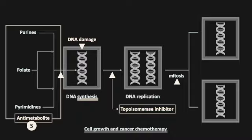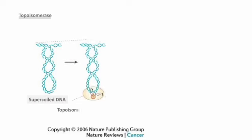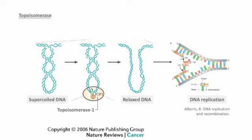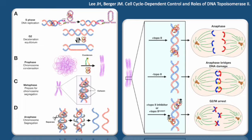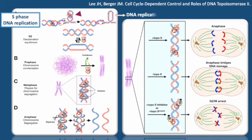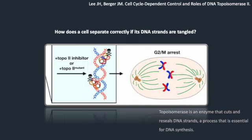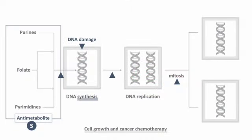Topoisomerase is an enzyme responsible for preventing DNA from getting tangled, as well as relieving pressure in supercoiled DNA during DNA replication. If topoisomerase doesn't function properly, cells mostly stop during the S phase because their DNA gets tangled, disrupting the replication process. Additionally, cells pause in the G2M phase, making it hard to separate DNA strands properly. Consequently, inhibitors targeting topoisomerase work during the S phase and G2 phase of the cell cycle.